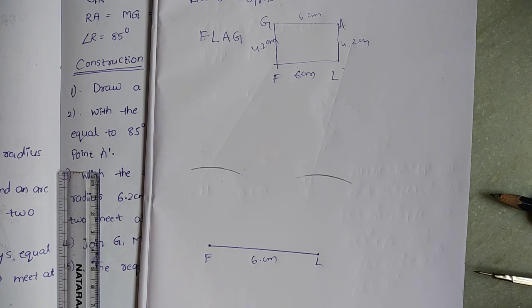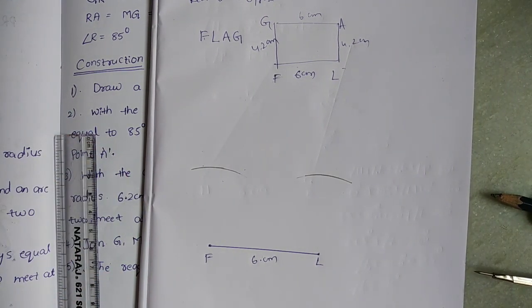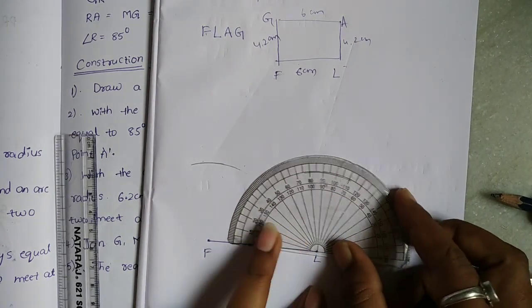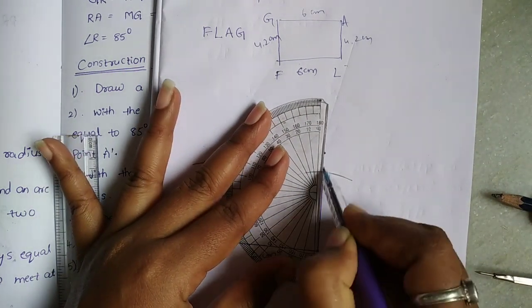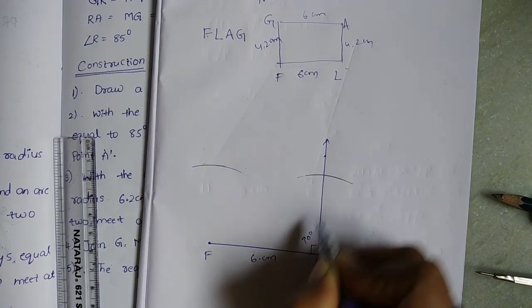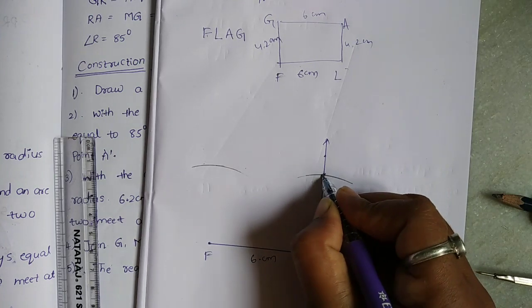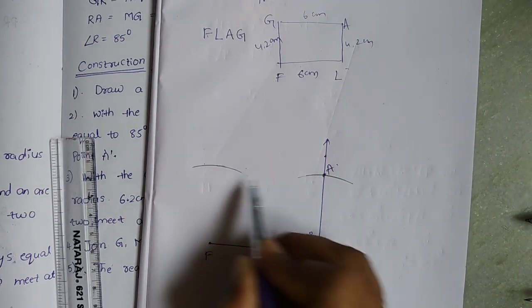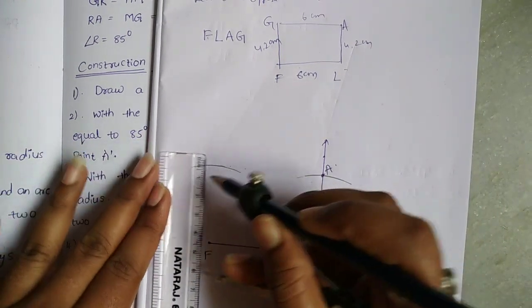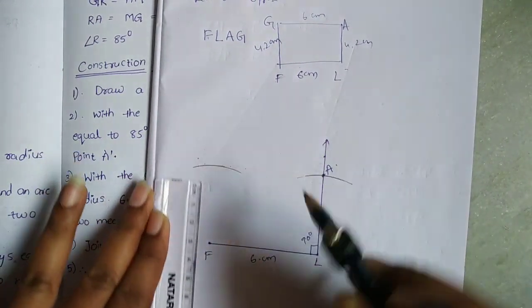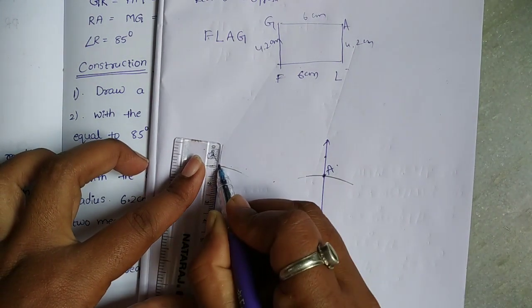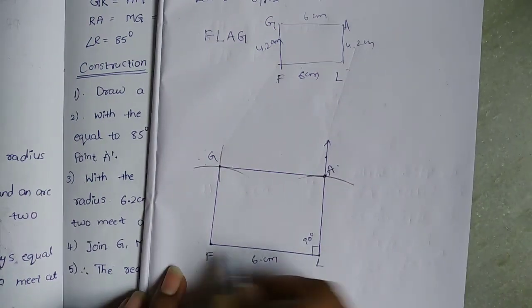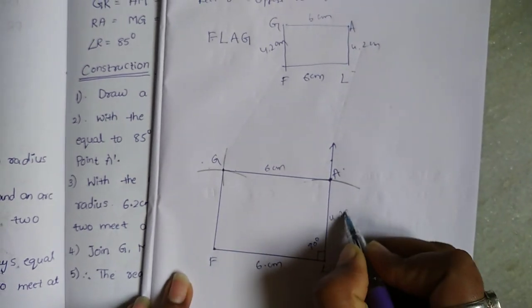We draw angles of 90 degrees at each corner. Then we draw the side of 6 centimeters and 4.2 centimeters accordingly. The points F, L, A, G are marked. This side is 6 centimeters and this side is 4.2 centimeters. This is the required rectangle FLAG.